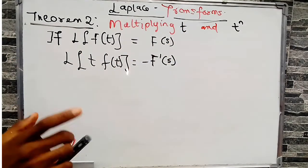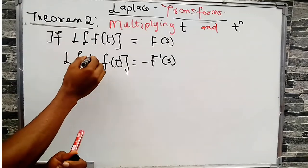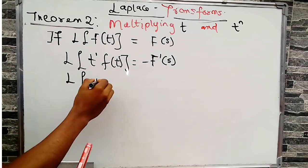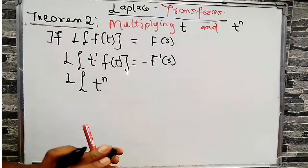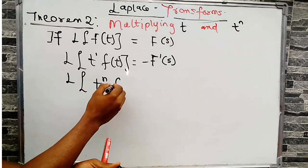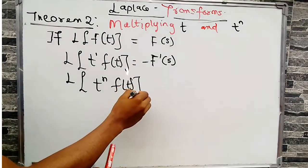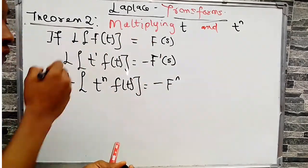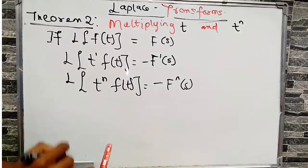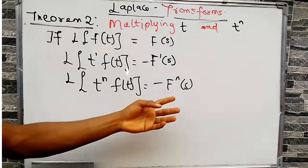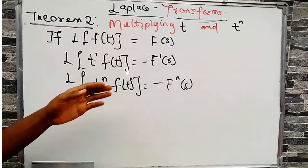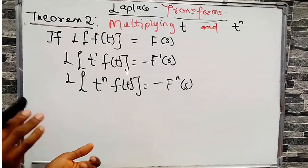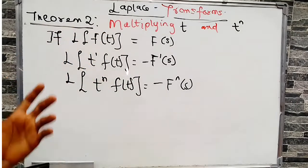The same goes for t raised to power n. Since the power of t here is 1, the Laplace of t^n times f(t) will be equal to the negative of the nth order derivative of F(s). So the power of t determines the order of derivative we take. This is a very simple theorem, so now let's prove it.